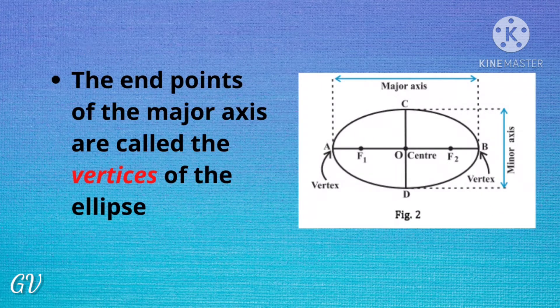The end points of the major axis are called the vertices of the ellipse. If you look at the diagram, there are end points A and B. So A and B are the vertices of the ellipse.